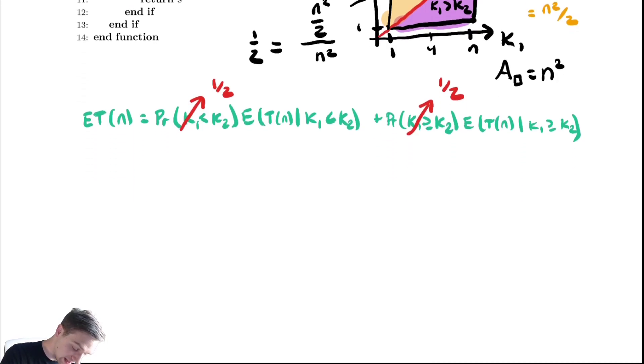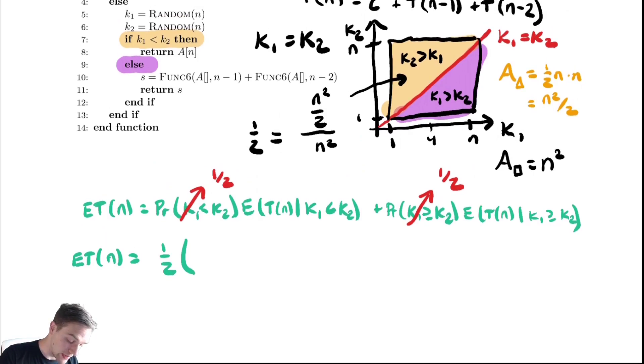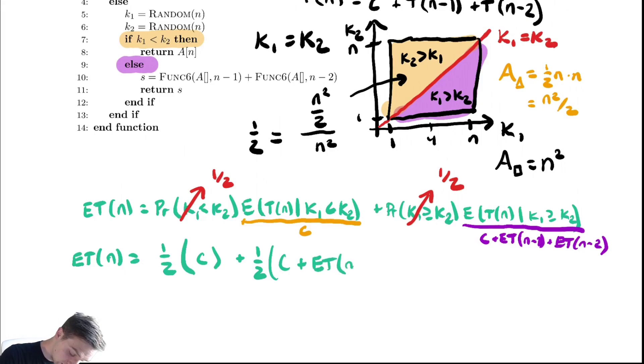Now let's continue marching forward with our analysis. This means ET(n) equals 1/2 times what is the expected runtime given that we have k1 less than k2. That means that we are in the orange region, which means that the only thing that occurs is finding the random variables and then returning. So that takes constant time. Otherwise, we are in the purple region, which we still have that constant time operation, but then we make two recursive calls, one of size n minus 1 and one of size n minus 2. Let's bring all of that together.